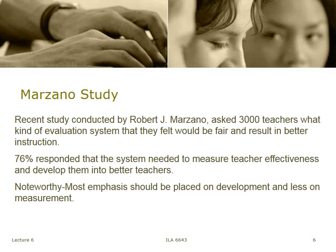Here's what 76% of them said: they needed a system to measure teacher effectiveness and develop them into better teachers — doing both of the things we said are very hard, if not impossible, to do. Going a little deeper, the teachers went on to say the emphasis of the system had to be placed on development, not on measurement. It doesn't say that measurement didn't need to be there — it just said the emphasis had to be on development. You don't constantly measure something if you want to see how well it's growing; you feed it and water it and it will just amaze you.